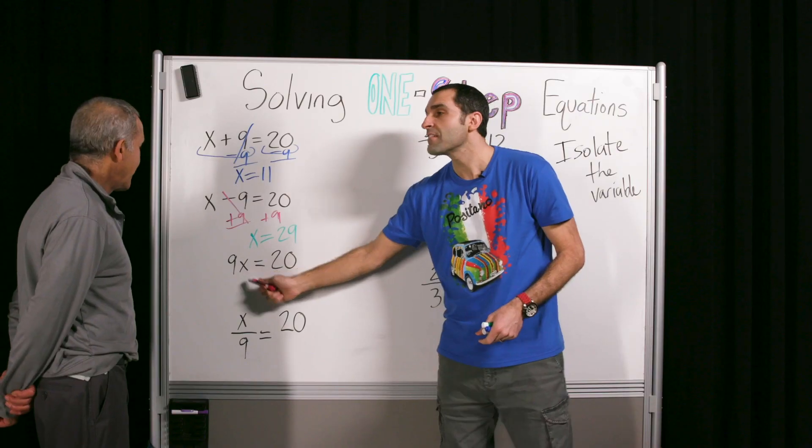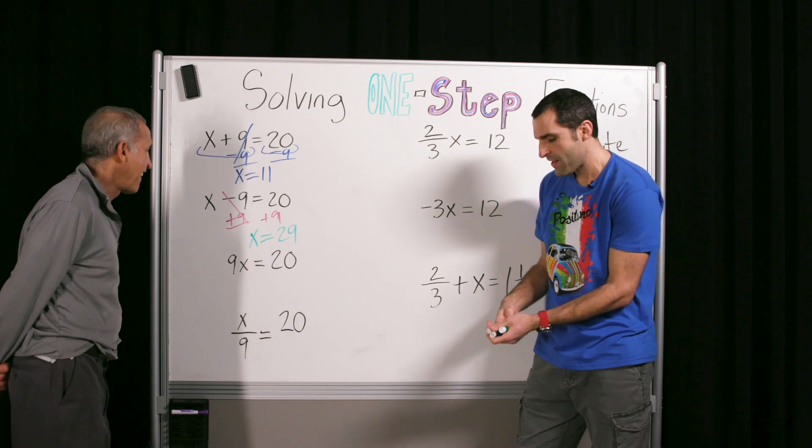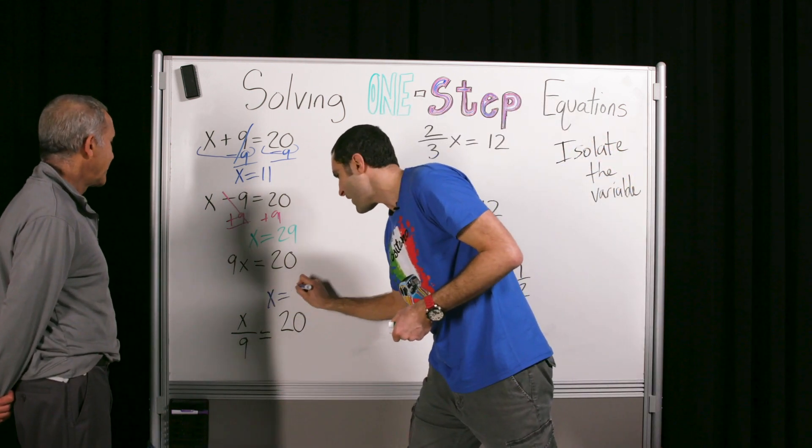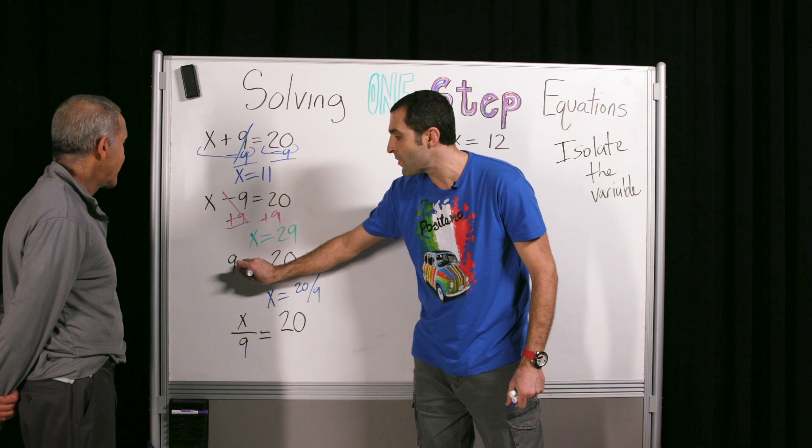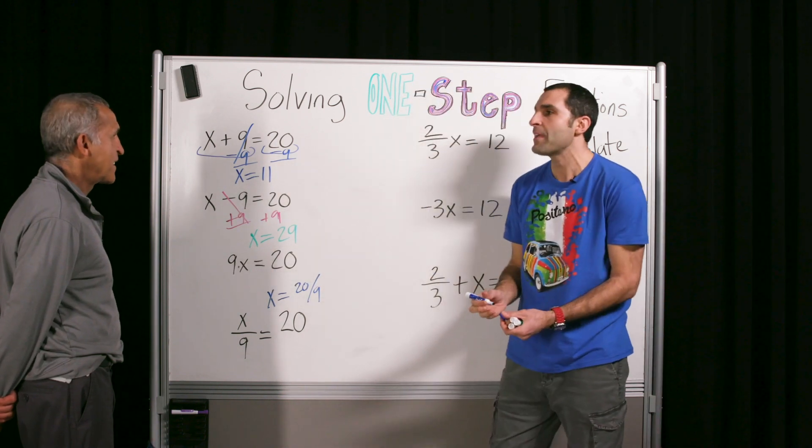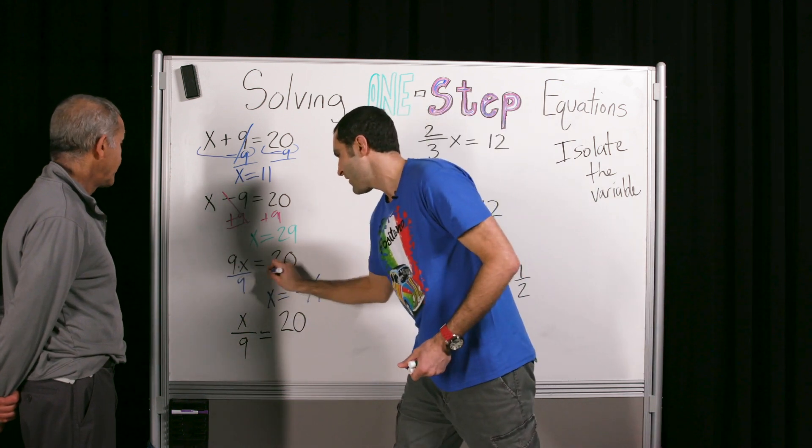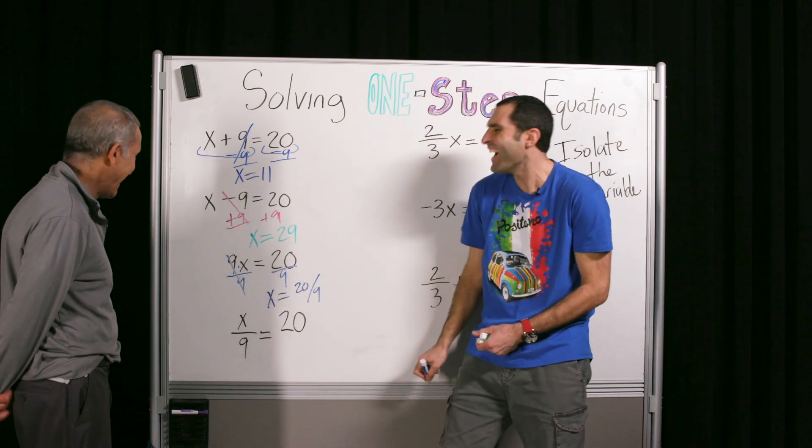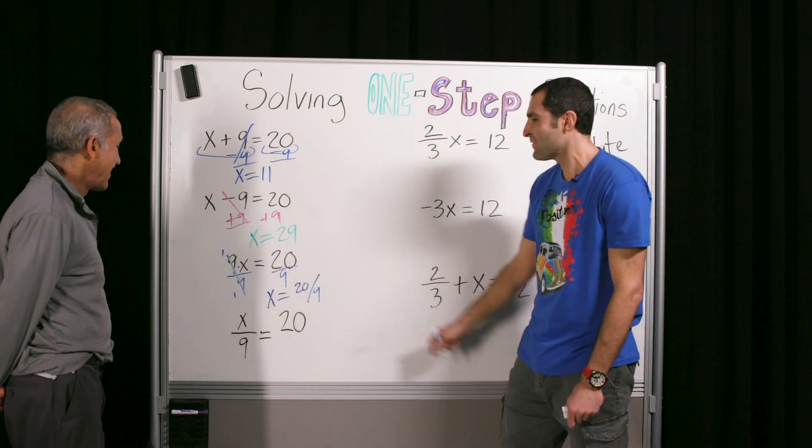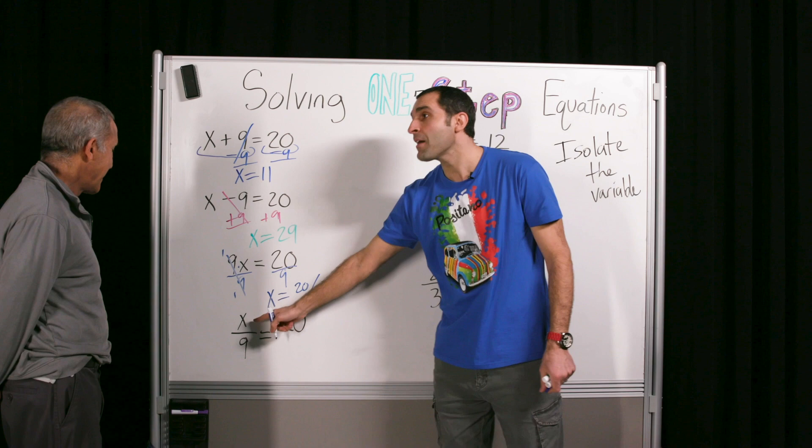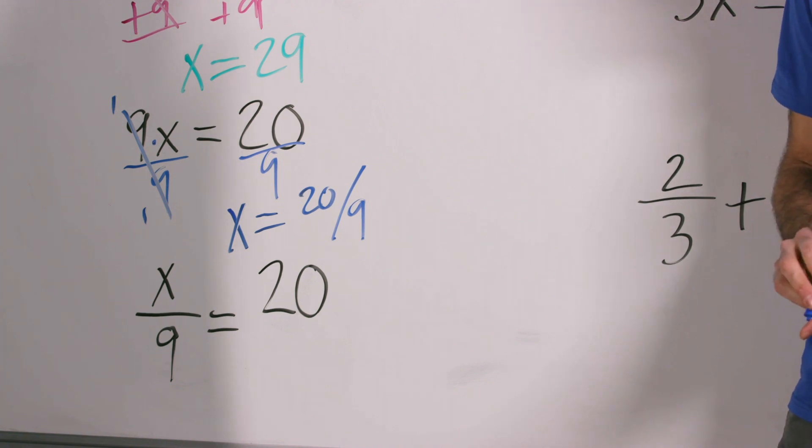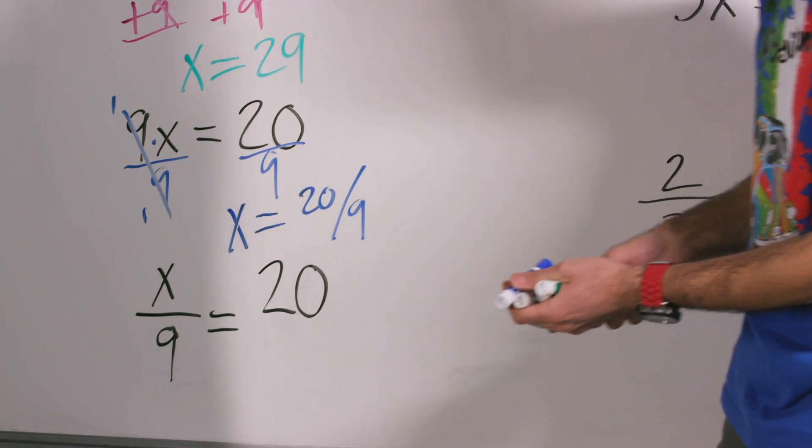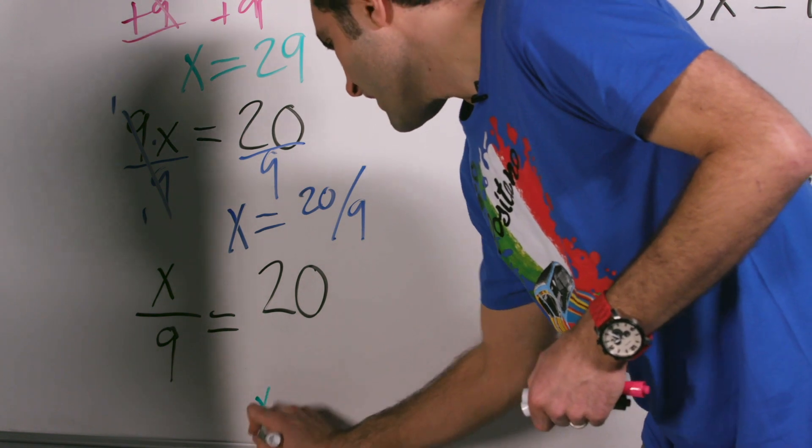So let's ramp it up here. Minus 9 plus 9 cancels. 20 plus 9 is 29. Do you know the answer? It's 20 over 9. 20 over 9 is correct. Does that simplify in any way? Can you simplify that fraction? Not really. Very good. So we'll leave it alone. It's improper. What do we need to do to both sides? That's opposite times 9. Divide by 9. That's right. 9 over 9 is 1. So 20 over 9.